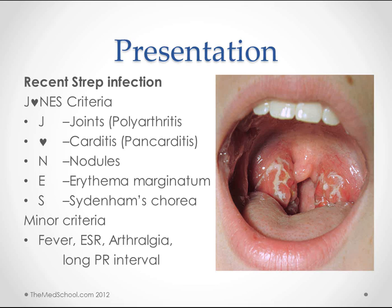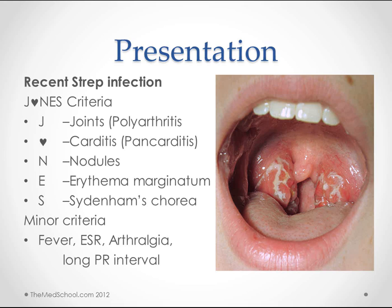But if it does progress beyond this stage and becomes rheumatic fever, then we have the Jones criteria to help us identify it. Some people like to use this mnemonic, spelling Jones with a heart instead of an O. J stands for joints — it's a polyarthritis. The heart is for carditis — you get a pancarditis with a mid-diastolic murmur. The N is for nodules, subcutaneous nodules. The E is for erythema marginatum. And the S is for Sydenham's chorea, which is kind of a dance-like choreiform disease.